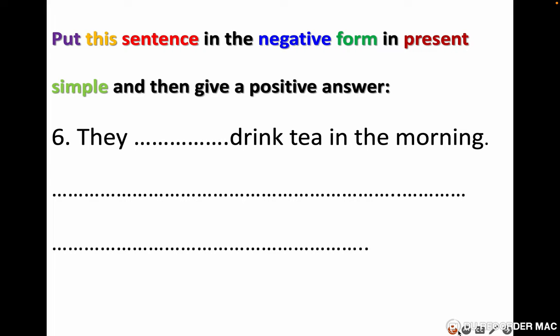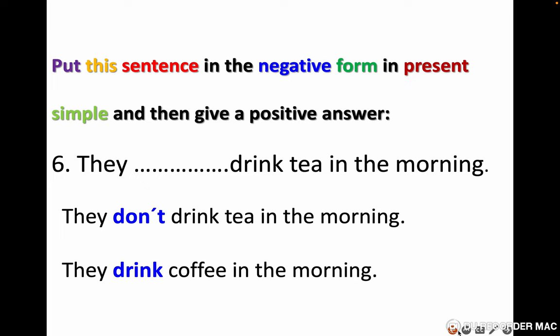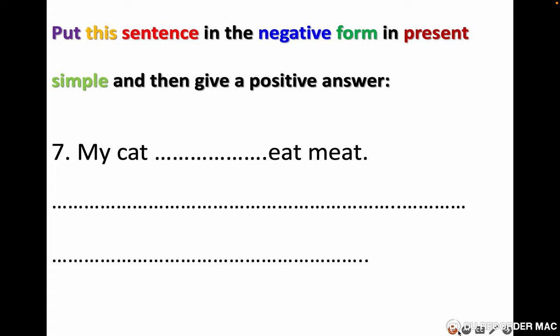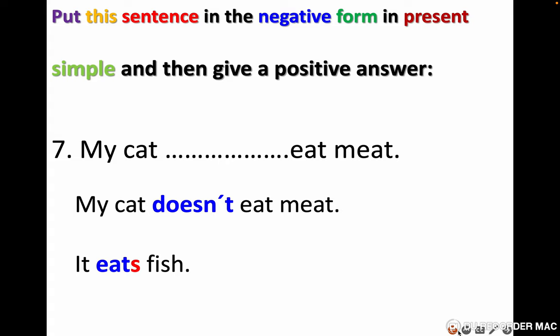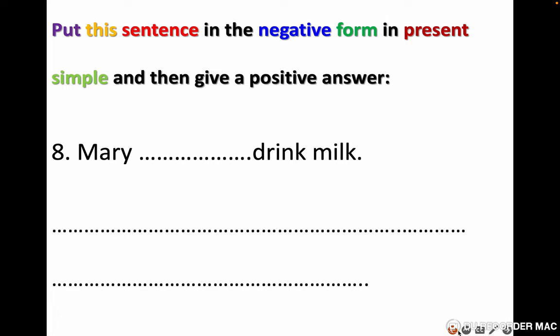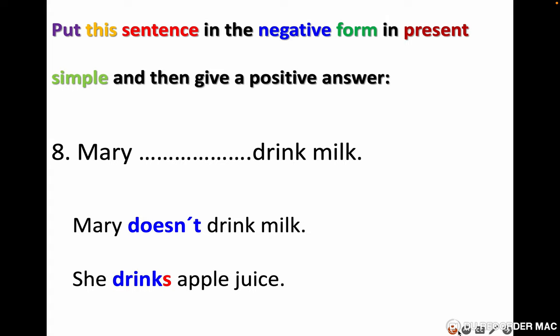Put the sentence in the negative form in present simple and give a positive answer. They drink tea in the morning — answer: they don't drink tea in the morning, they drink coffee in the morning. Number seven: my cat eats meat — answer: my cat doesn't eat meat, it eats fish. Number eight: Mary drinks milk — answer: Mary doesn't drink milk, she drinks apple juice.